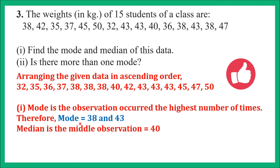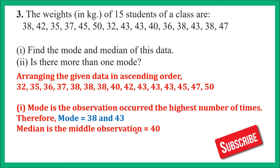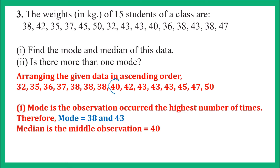Now we need to find the median. Median is the middle observation — the center-most observation. We have 15 students, so 15 observations. Since the number is odd, we add 1 and divide by 2: 15 + 1 = 16, divided by 2 = 8. So the 8th observation is the median. Counting from the left: 1, 2, 3, 4, 5, 6, 7, 8 — the 8th observation is 40. There are 7 observations on each side. So the median of this data is 40.